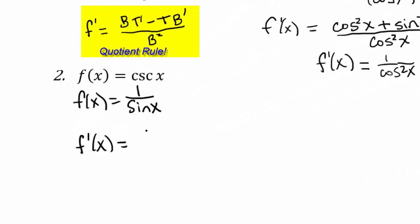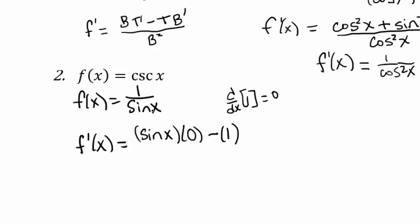Bottom is sine x. The derivative of the top is what? Zero. d dx of 1 is 0. So I'm going to say 0 minus the top, which is 1, times the derivative of the denominator, which is d dx of sine was cosine. So we're going to have times cosine of x and then over sine squared, the bottom squared.